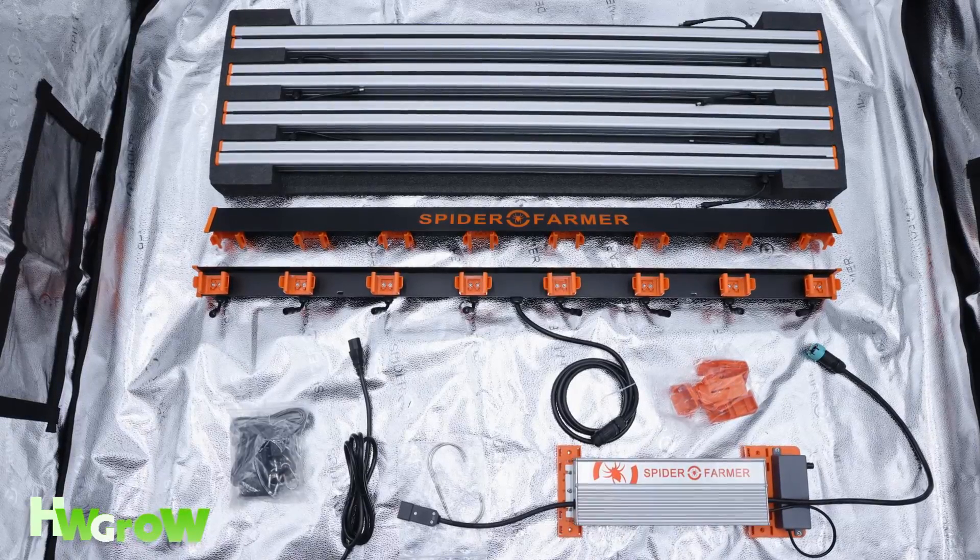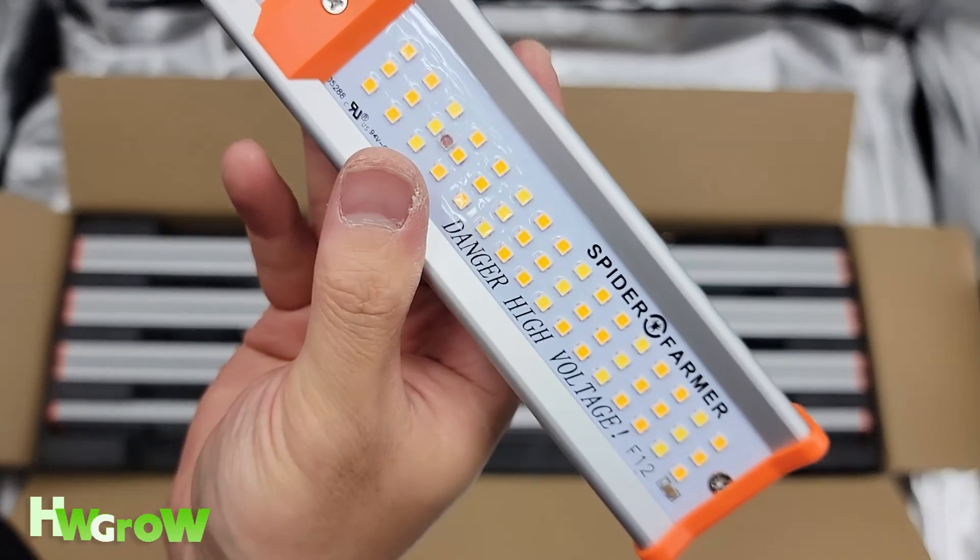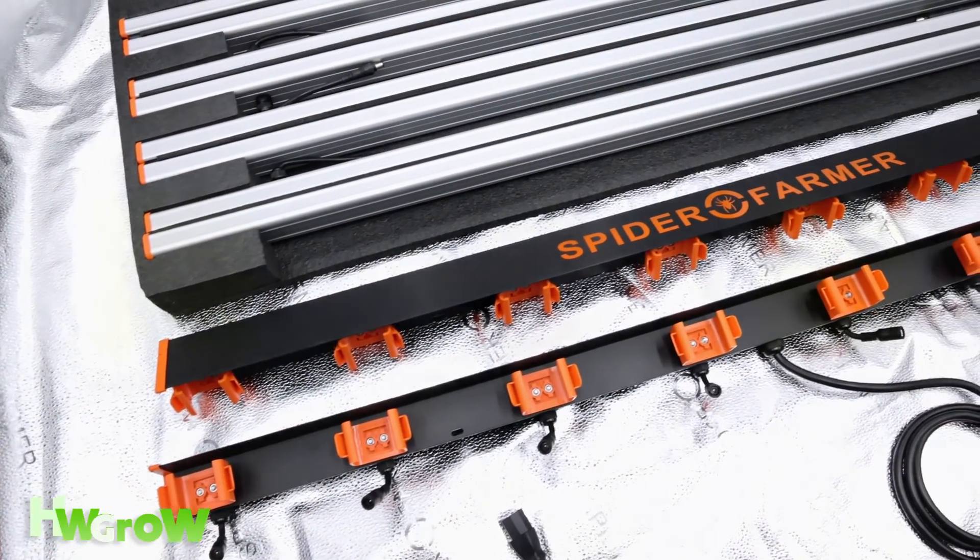This is everything included and this light has 8 independent bars that you connect using brackets onto 2 outer frames.